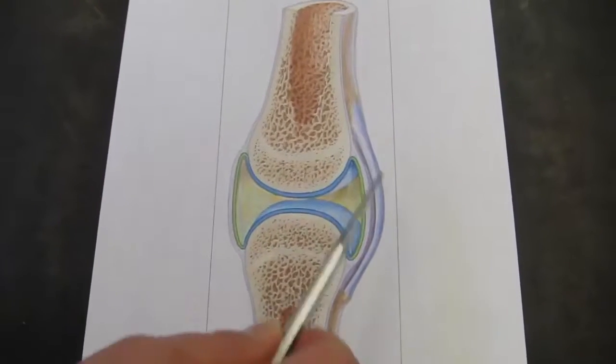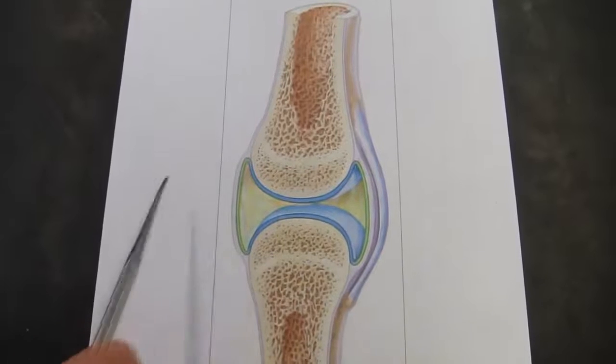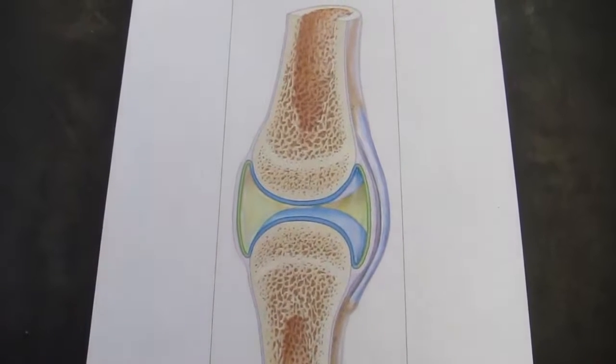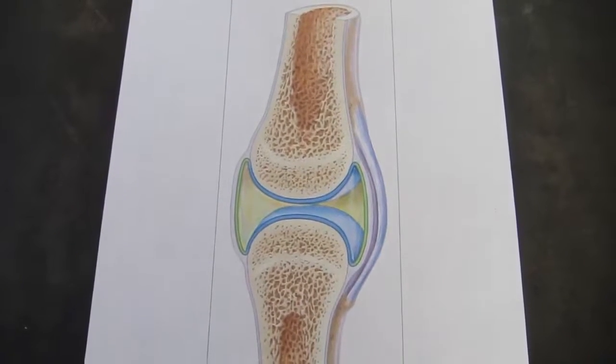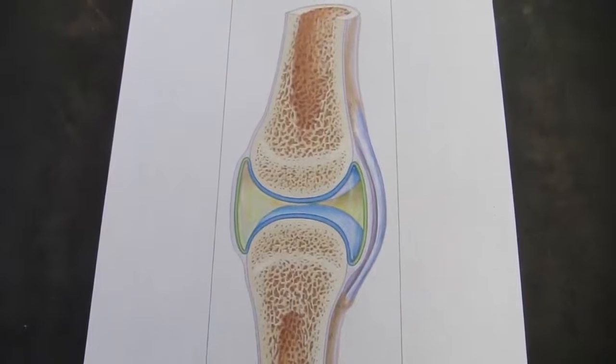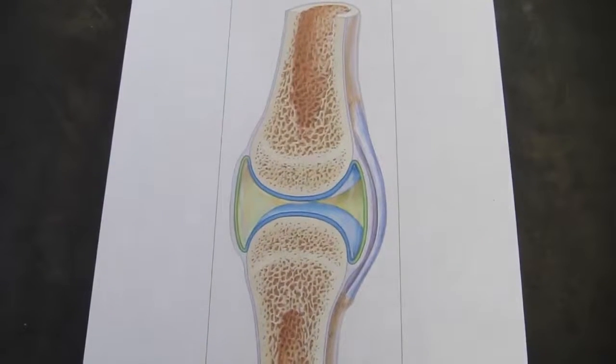So the presence of a joint cavity is really indicative of a synovial joint, and there are also specific structures that you always find in synovial joints as well, which we'll point out.